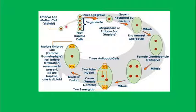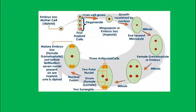The MMC undergoes meiotic division to form four megaspores — first forming the megaspore dyad and later the megaspore tetrad. This is all meiotic division. Out of the four haploid cells, three will degenerate and only one will survive.